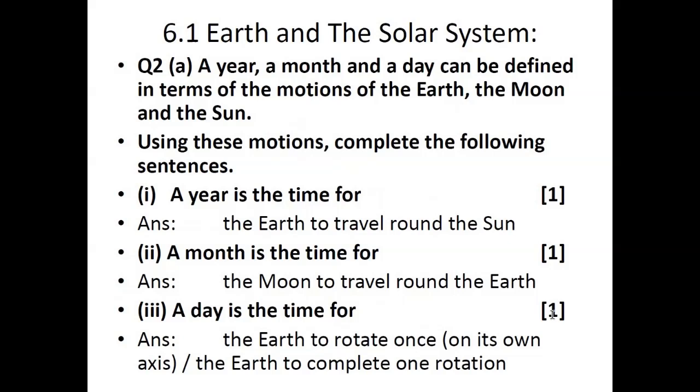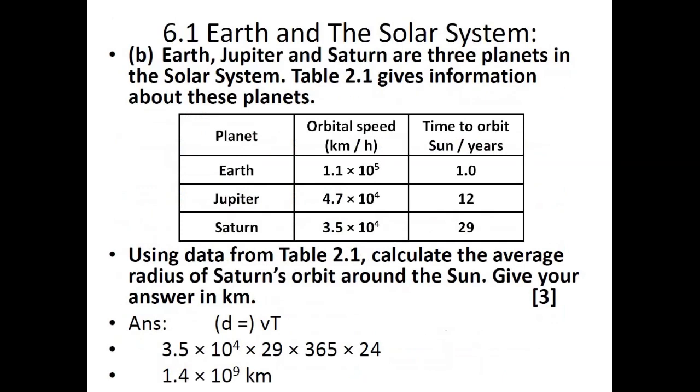A year, a month, and a day can be defined in terms of the motion of the Earth, the Moon, and the Sun. Complete the following sentences: A year is the time for Earth to complete one rotation around the sun. A month is the time for the Moon to travel around the Earth. A day is the time for the Earth to rotate once on its own axis.